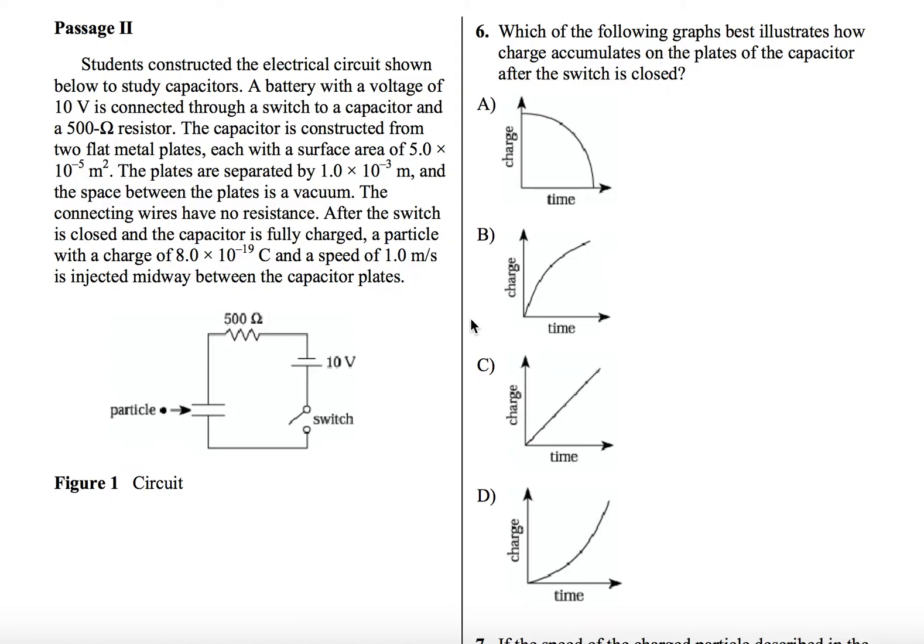So there's kind of a lot of things going on here. So basically it's telling you that we have a circuit. In the circuit, it's a very simple circuit. We have a capacitor right here that's charged via this 10-volt battery. There's some internal resistance in the circuit, which is good.